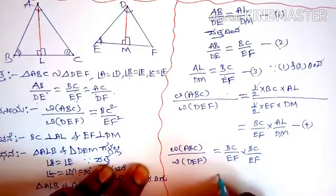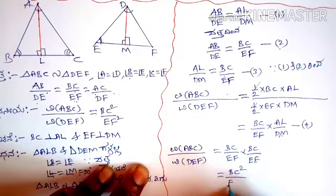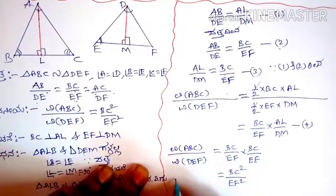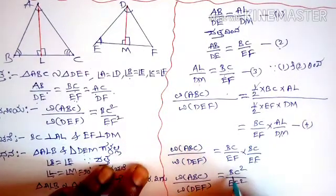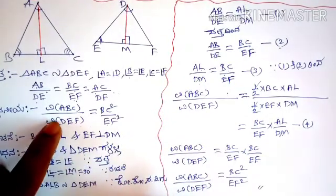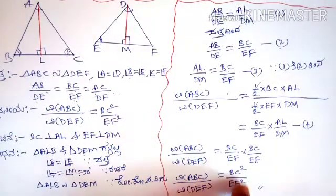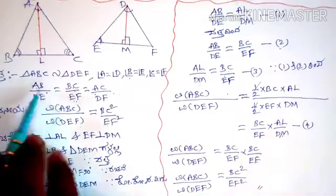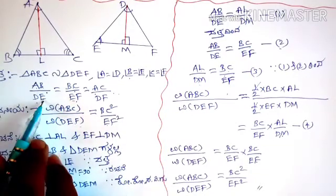So here we go. BC into BC is BC square; EF into EF is EF square. Therefore, ABC upon DEF is equal to BC square upon EF square. BC square upon EF square, and AB square upon DE square — people call BC square upon EF square by BGum.